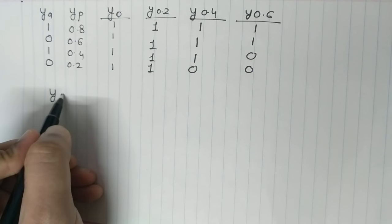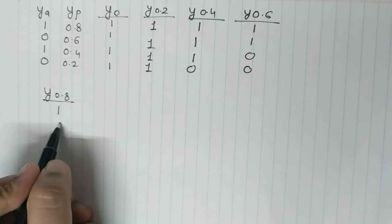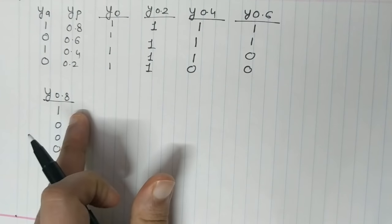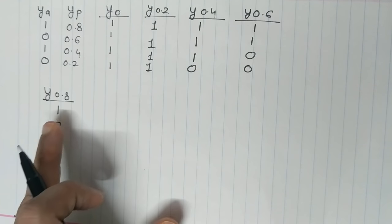For Y of 0.8 you will have the values as 1, 0, 0, 0.